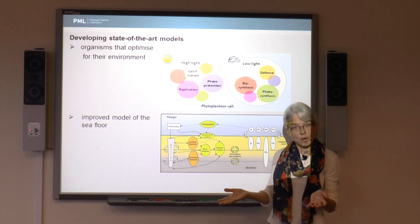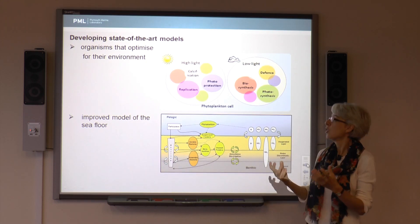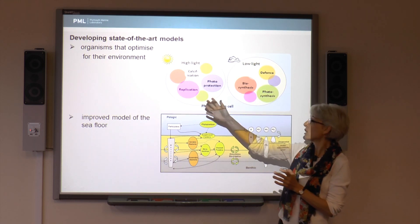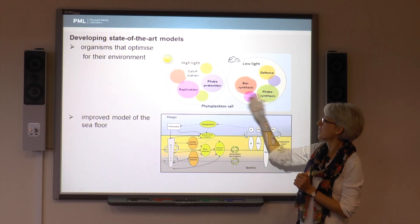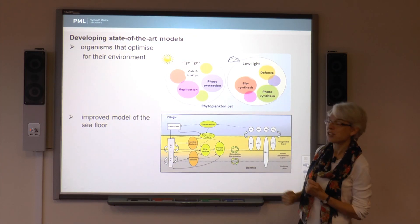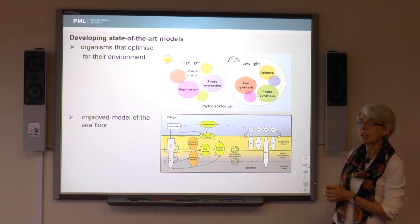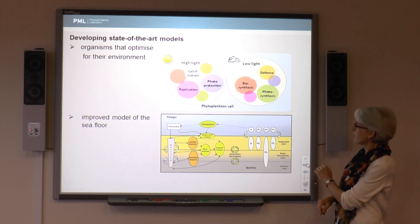We also want to work to develop our models — trying to produce better models than we've got already — working with lab and field scientists who can tell us about the kinds of things these organisms do. One example: we're getting inside the cells of the phytoplankton to understand what's going on there. For instance, how they respond to high light levels — they put more resources in to protect themselves against the high light; in dark conditions, they put more resources into photosynthesis. This is an area that many scientists are working on at PML. We're also working to improve our model of the seafloor. At the moment, our seafloor model has three layers — maybe that will be improved if we put extra layers in.